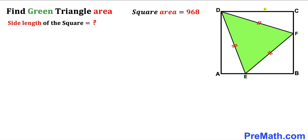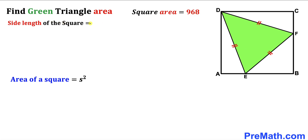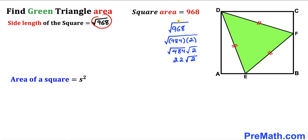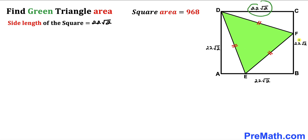Let's calculate the side length of this square. Recalling the area of a square formula: area equals s squared, where s represents the side length. In our case the area is 968, so the side length is the square root of 968. Simplifying, that turns out to be 22 times square root of 2. So the side length of this square is 22√2 units.